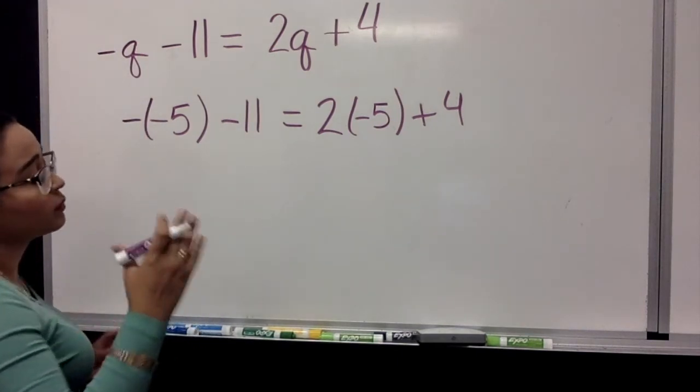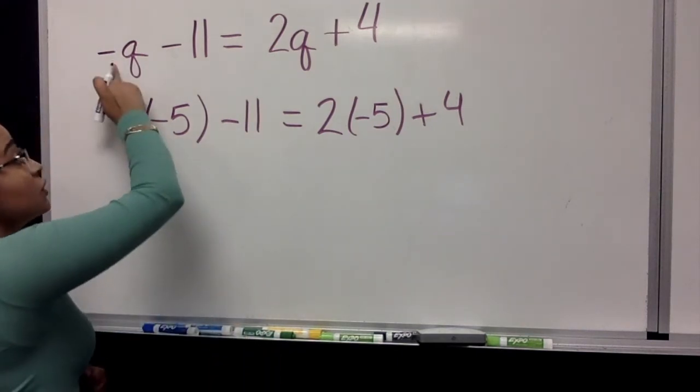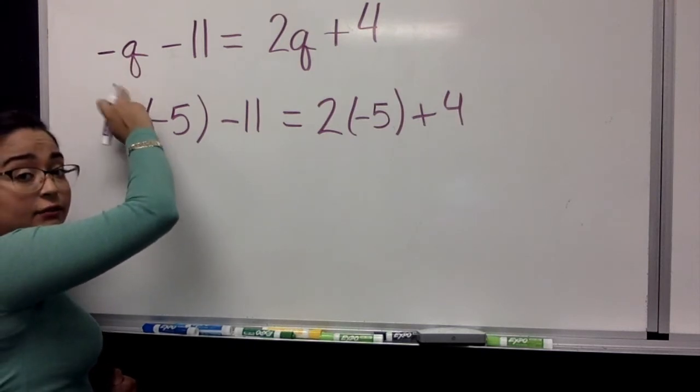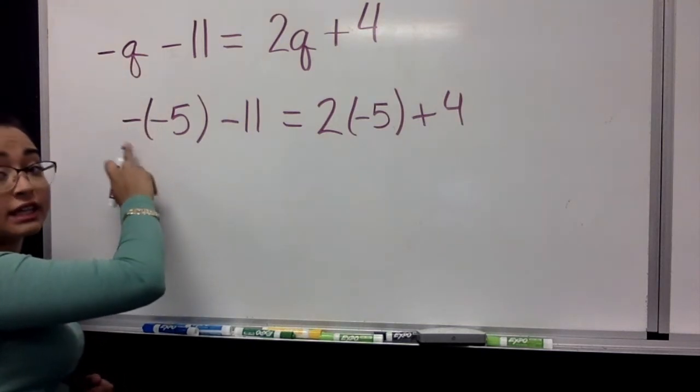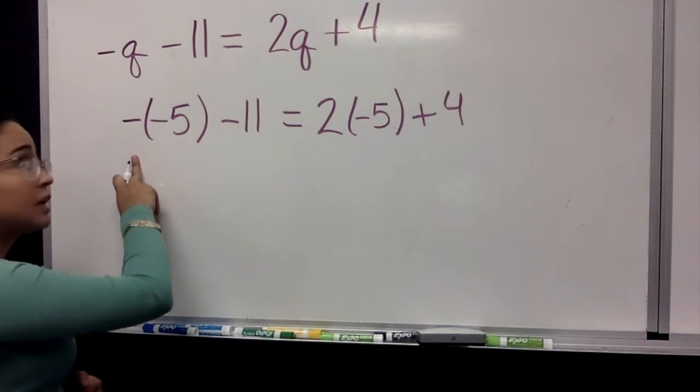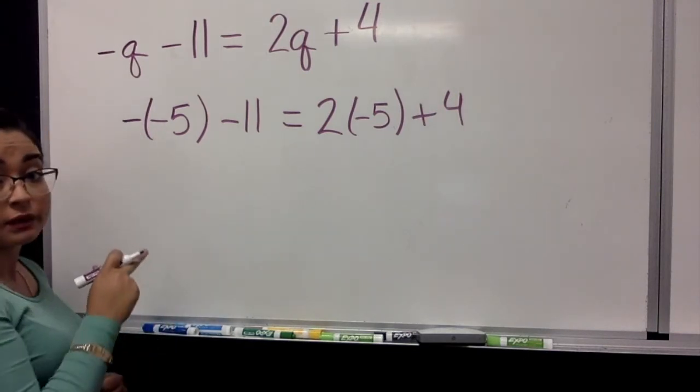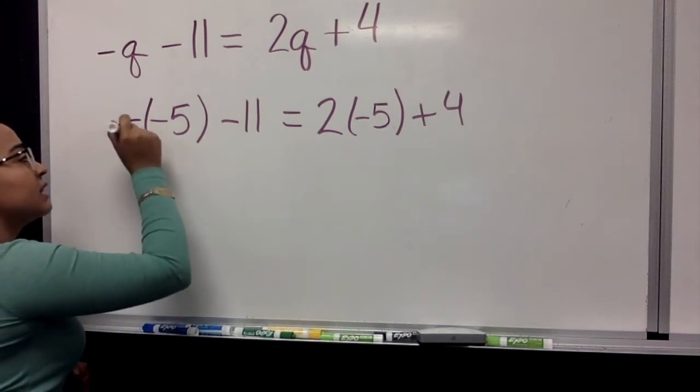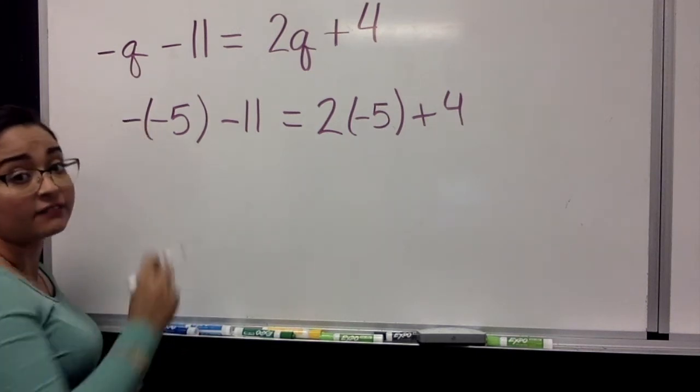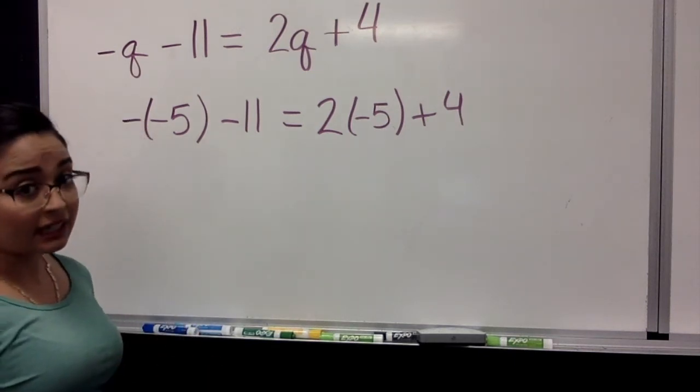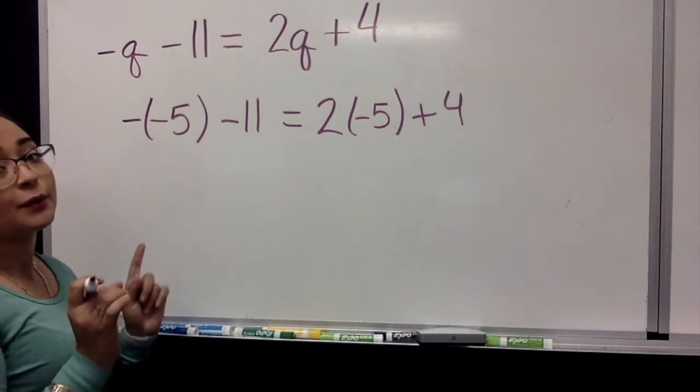We just plug in the 5 where it already is. This Q already had a negative in front of it, so I'm going to put a negative right there as well. It does not count as the one that comes with a negative 5. So here what we're going to do is that we're going to multiply negative 1 times negative 5. We're multiplying a negative and a negative. So our answer will be positive.